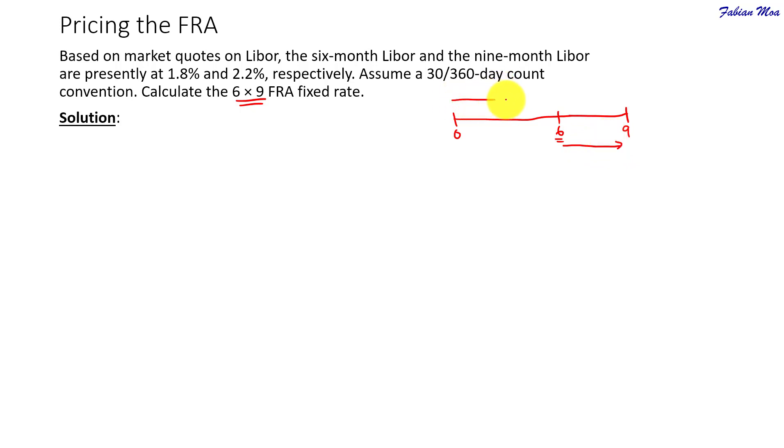So, the 9 months LIBOR is given as 2.2% and the 6 months LIBOR is given as 1.8%. So, in this case, you are asked to find the 6 by 9 FRA fixed rate which is effectively the 3 month forward rate that starts in 6 months time.